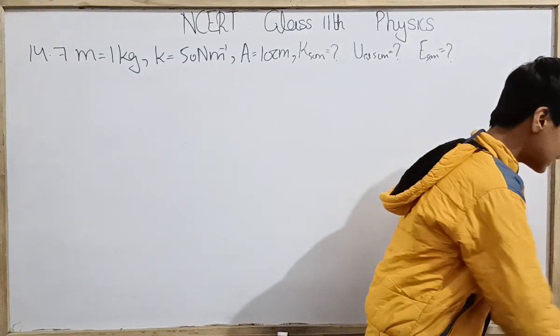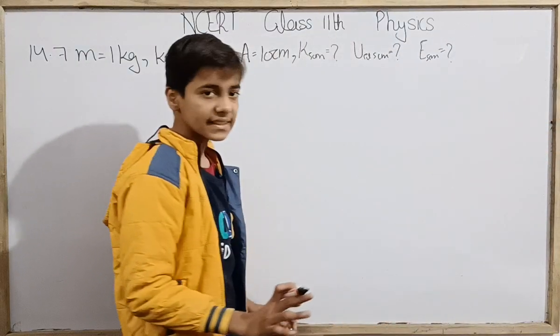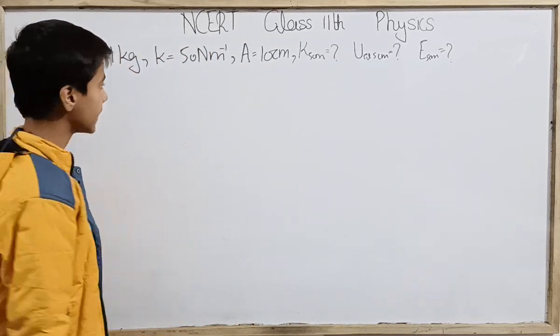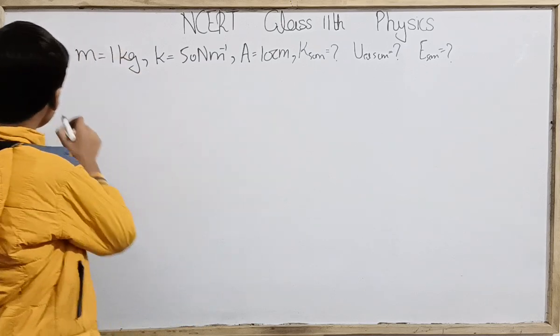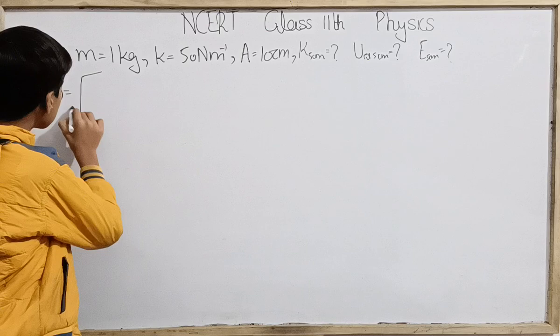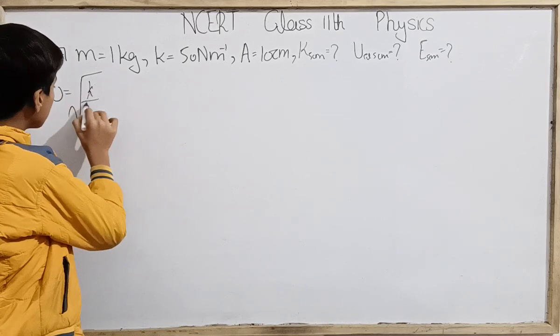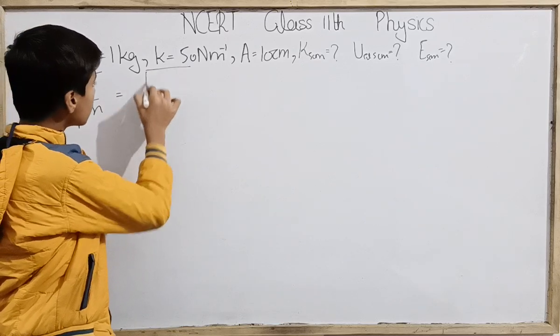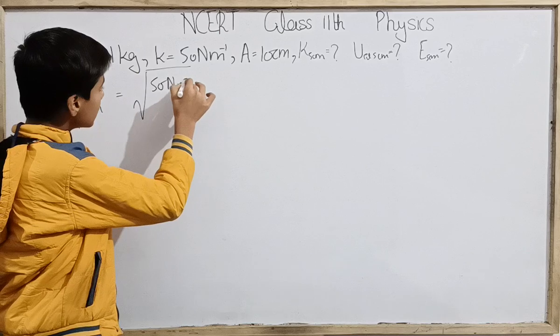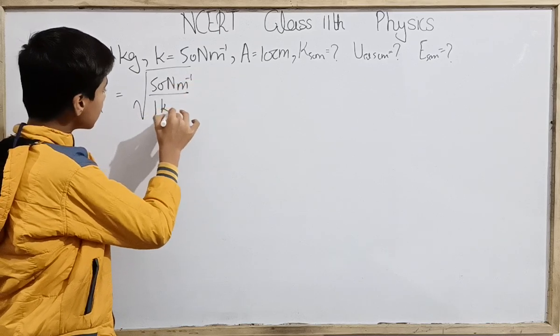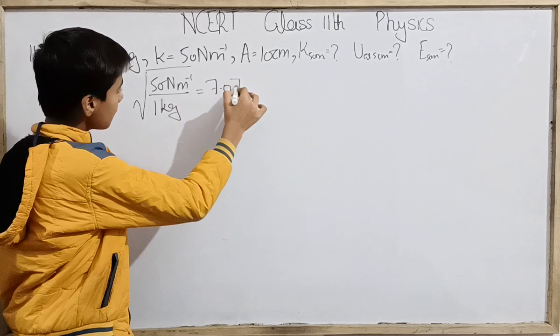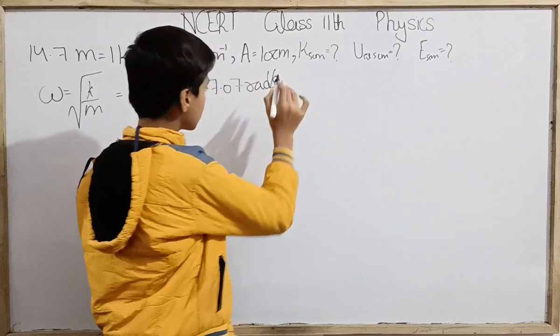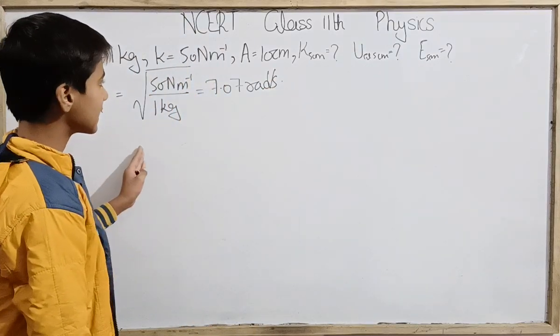Only conservative forces act, so the total mechanical energy throughout the motion of the body remains constant. We will use angular frequency omega, that is square root of k over m. This is the square root of 50 Newton per meter over 1 kilogram. This is 7.07 radian per second.